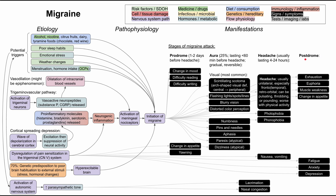Lastly, the postdrome. This is a series of features that happen once the headache has subsided. It can include exhaustion and muscle weakness. Patients can also feel the opposite — slightly euphoric, more hungry, or energized. In the longer term, it can also cause fatigue, anxiety, and depression. A change in mood, activity level, or appetite after the headache is considered a postdrome for the migraine.